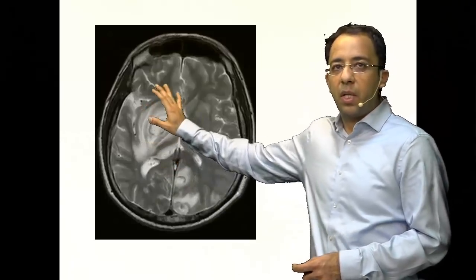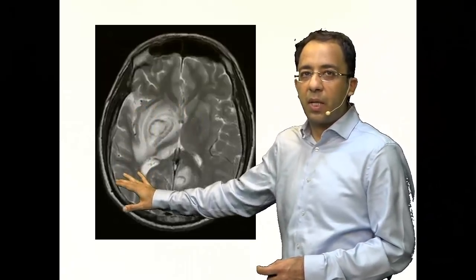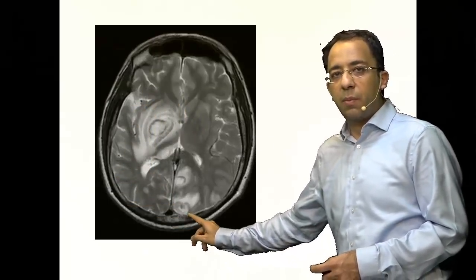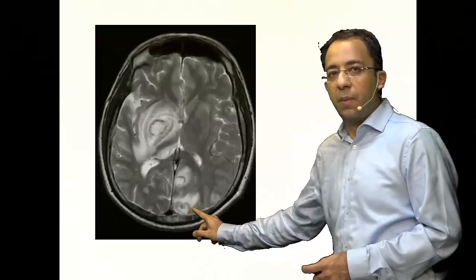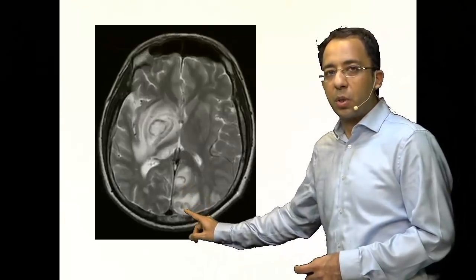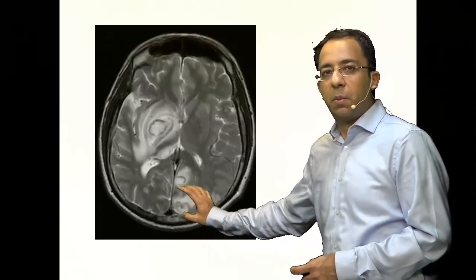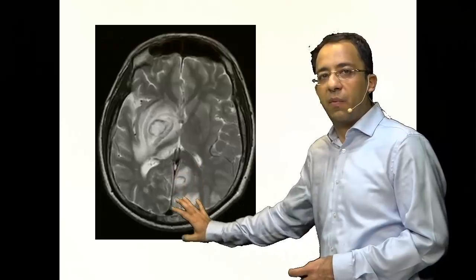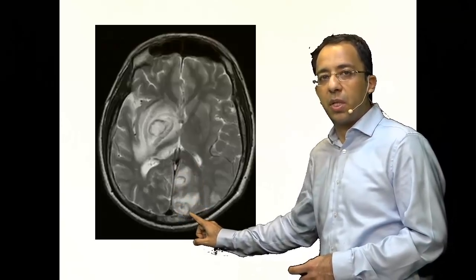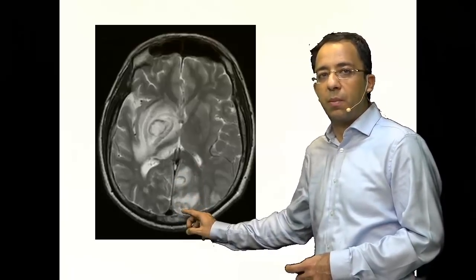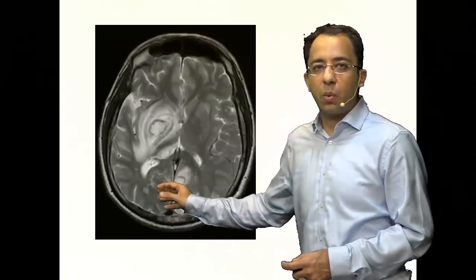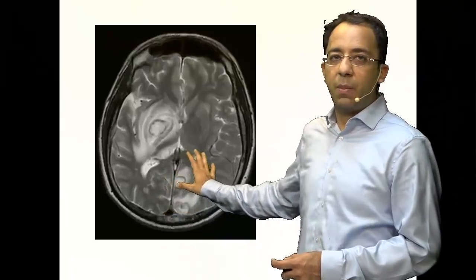The entire white area surrounding the lesion is edema in the basal ganglia area. You also see similar lesions in the cortex, in the occipital lobe, typically at the gray-white matter junction — that hypointense rim, bright lesion with surrounding edema.